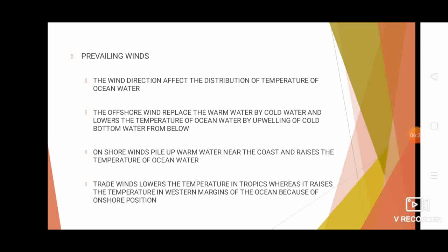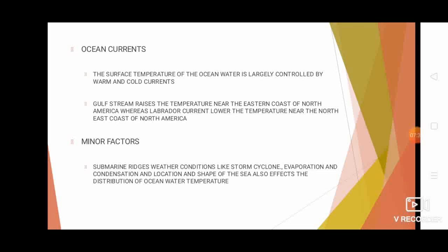The third factor is prevailing winds. Offshore winds replace warm water with cold water, lowering the temperature of that area, whereas onshore winds pile up warm water near the coast, raising the temperature. For example, trade winds in lower latitudes lower the temperature in tropical areas especially on the eastern coast, while raising temperatures on the western margins of oceans due to onshore effect.